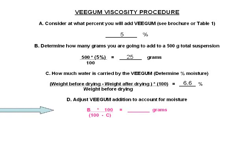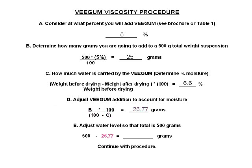This is the equation for correcting the Vigam amount for moisture. Inserting our already derived numbers into the equation and doing the math allows us to determine that in order to truly use 25 grams of the clay, we must adjust the actual weight to 26.77 grams. With the actual amount of Vigam necessary for our quality control evaluation now known, we can subtract the amount from 500 total grams. Our result is that we need to use 473.23 grams of water.